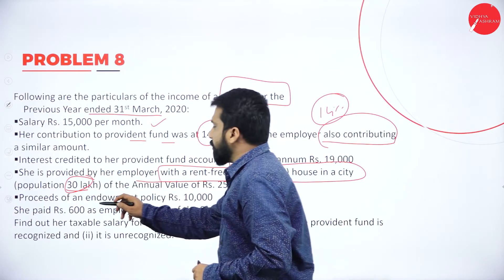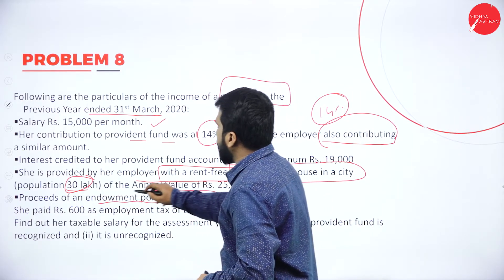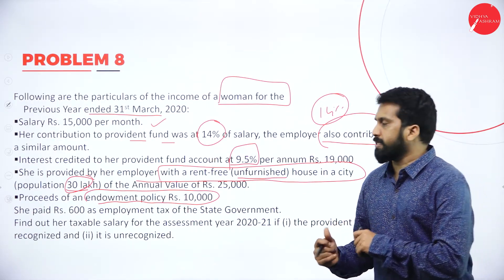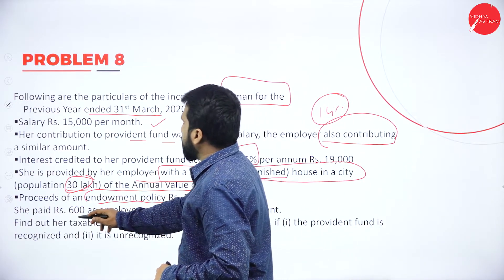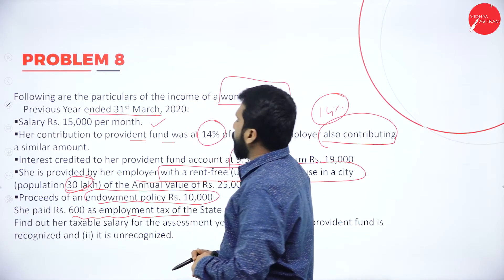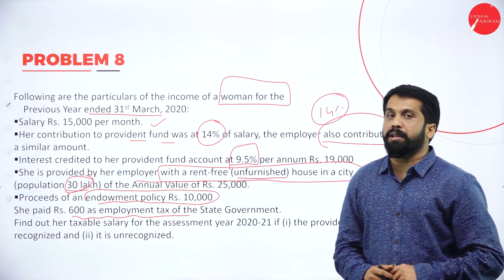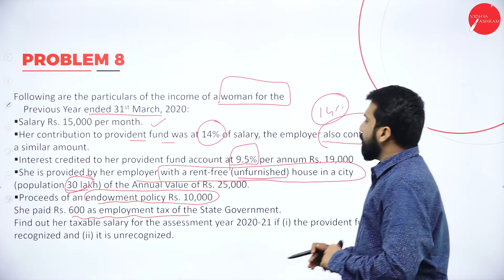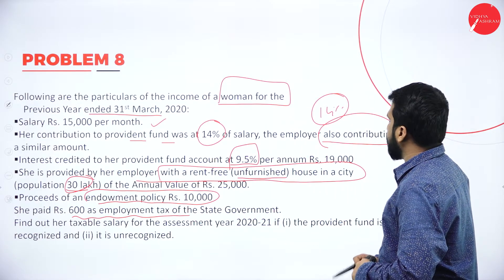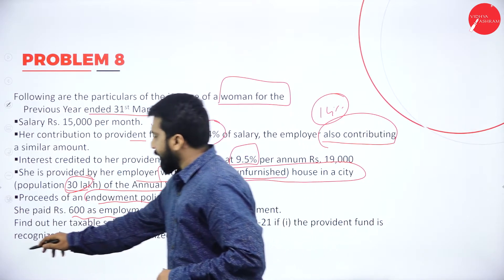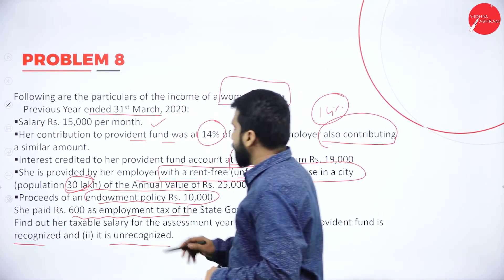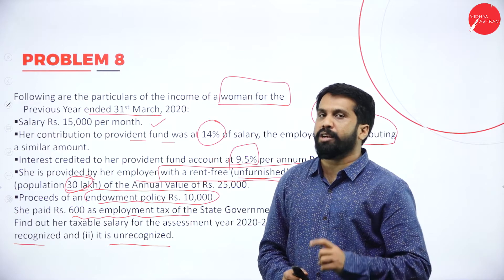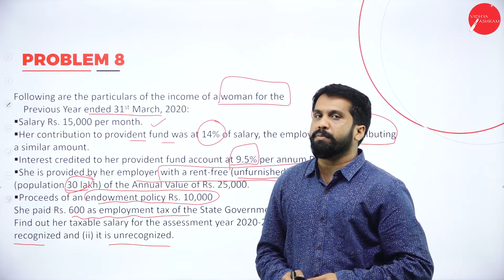Proceeds of endowment policy — remember, this endowment policy is a capital receipt. We will do it under capital gain, not under salary. She paid 600 as employment tax — whatever employment tax, we call it as expenses, we have to deduct from salary income. You have to find out her income from salary if provident fund is recognized, and if provident fund is unrecognized — you have to do it two times.